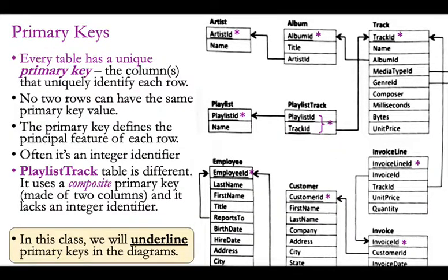Why not use just track ID as the primary key in playlist track? Because by definition, if it's not the primary key, I want to allow multiple rows for the same track ID. A track can be on many different playlists — top ten, wedding songs, whatever. The same song could be on all those different playlists. But you can't have the same song twice on the same playlist — it's either on the playlist or it isn't. Similarly, you wouldn't use just playlist ID because you want to allow multiple songs per playlist.